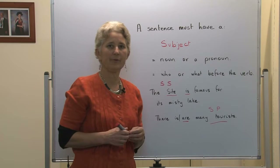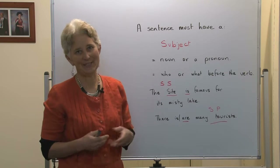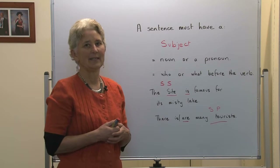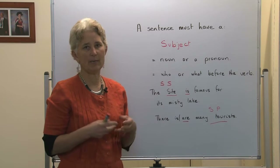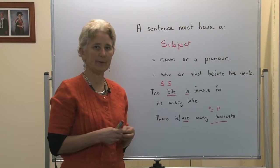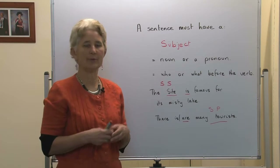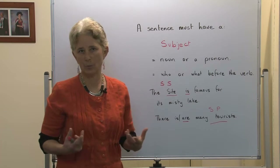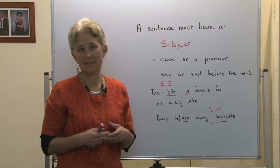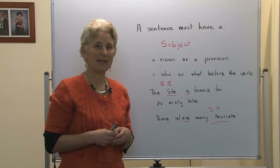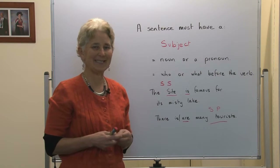As we go through this small video of Pearl's visit to Nanhu Lake, Pearl is going to use the past tense when she talks about what she did or what she saw. She uses the present tense when she talks about things that are always true, things that are generally true all the time. For example, 'the site is famous for its misty lake' is a fact that is always true about Nanhu Scenic Site.